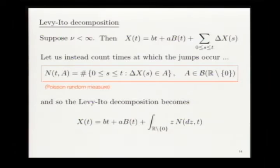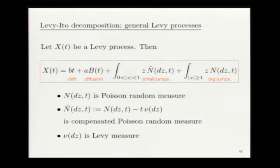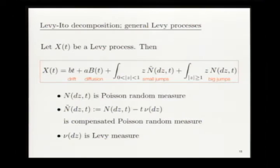For a finite Lévy measure this works directly. For infinite jump activity (general case), the Lévy-Itô decomposition always decomposes into drift, diffusion, big jumps (where the Lévy measure is finite), and infinite-activity small jumps. For the small jumps you must use a compensated Poisson random measure — subtracting the Lévy measure — to make these integrals converge. This compensated term must be interpreted as a stochastic integral.